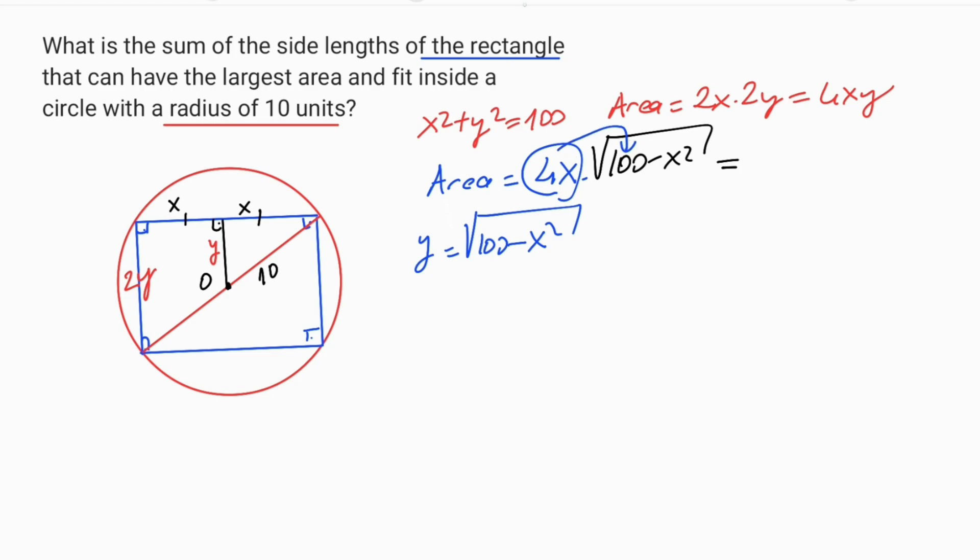If we take 4x back inside the square root, the expression will be equal square root 100 times 16x squared minus x squared times 16x squared. If we organize the equation, the area must be equal square root 1600 times x squared minus 16 times x to the power of 4.